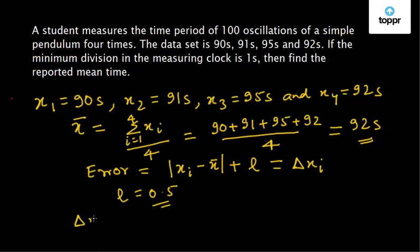Now let us calculate this error for each data. So delta x1 will be equal to mod of 90 minus 92 plus 0.5 that is 2.5. Similarly, we will get delta x2 equal to 1.5,